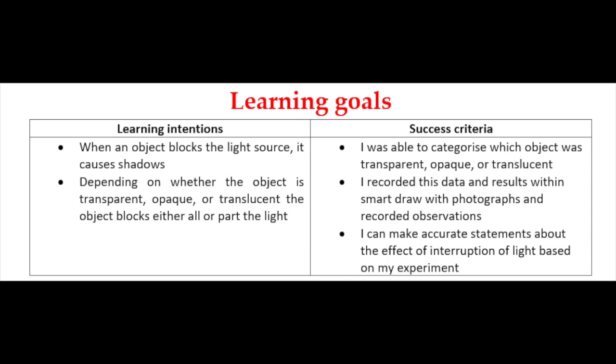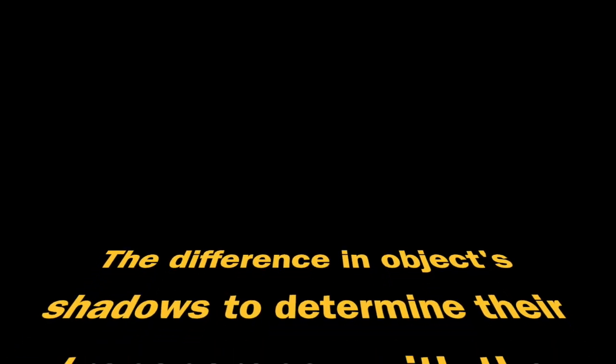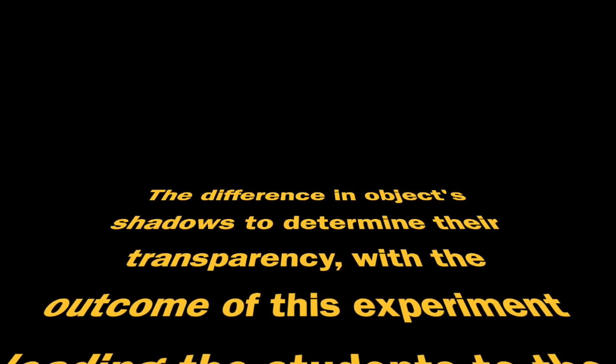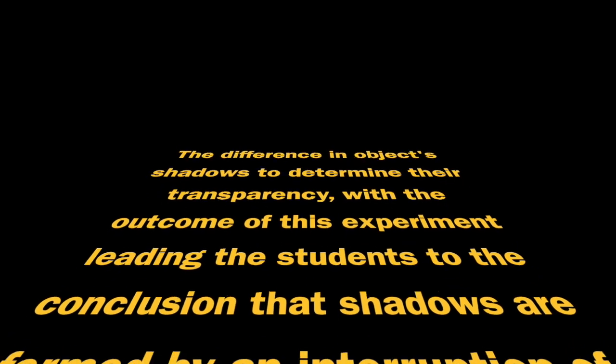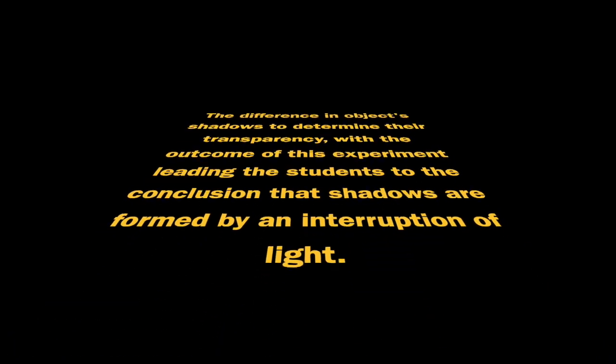So in saying that let me break down the specific light behaviour we'll be investigating today in our experiment. Our experiment will be investigating the differences in objects shadows to determine their transparency with the outcome of this experiment leading the students to the conclusion that shadows are formed by an interruption of light.